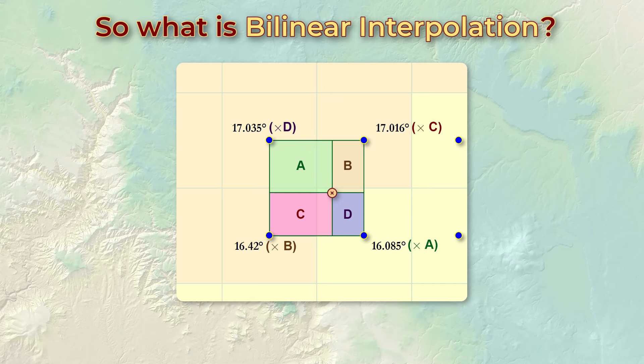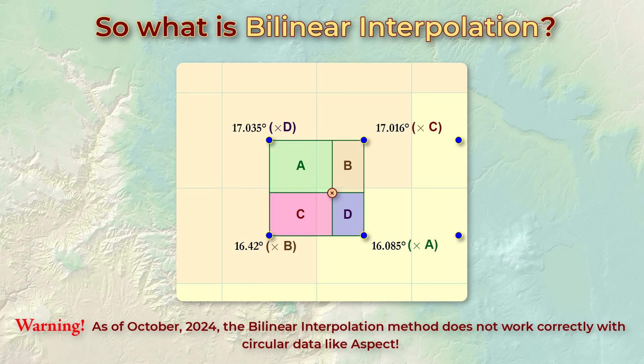However, as of October 2024, it is a terrible choice for circular variables like aspect. Right now, this tool has no option to use circular statistics to calculate a weighted mean direction of four aspect values.